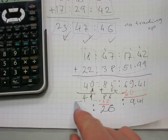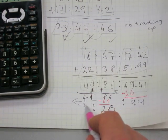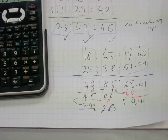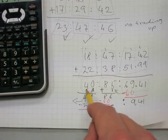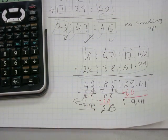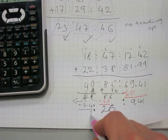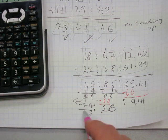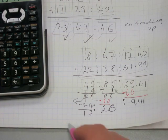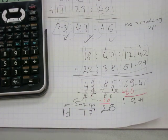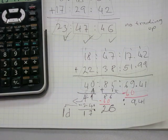If you want, you can also trade some of it for days by subtracting 24 from the hours. You can't take 4 from 1, so trade — that gives a 3 and becomes 11; 11 take away 4 is 7, and 3 take away 2 is 1. The 24 hours become 1 day, giving: 1 day, 17 hours, 26 minutes, and 9.41 seconds.